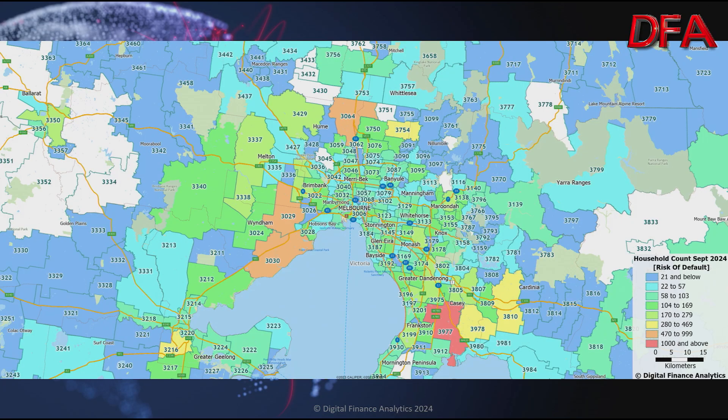Comparing with Melbourne, there are higher pockets in and around the centre of Melbourne, with postcodes 3977, 3064, and 3030 — areas highlighted earlier — being the real hotspots in the number at risk of default. In fact, 3977 is the highest in the Melbourne area.